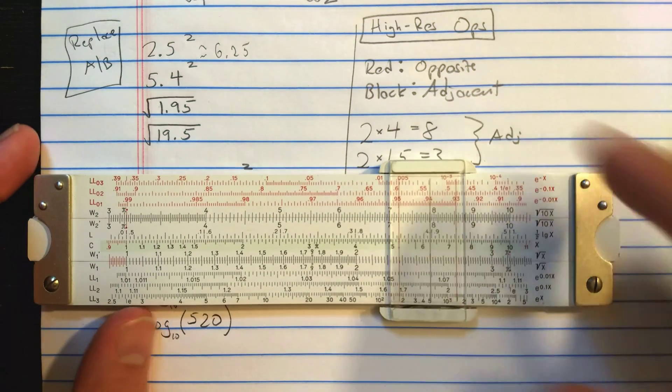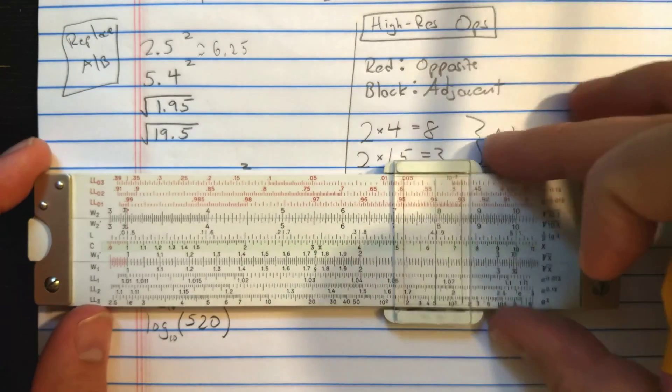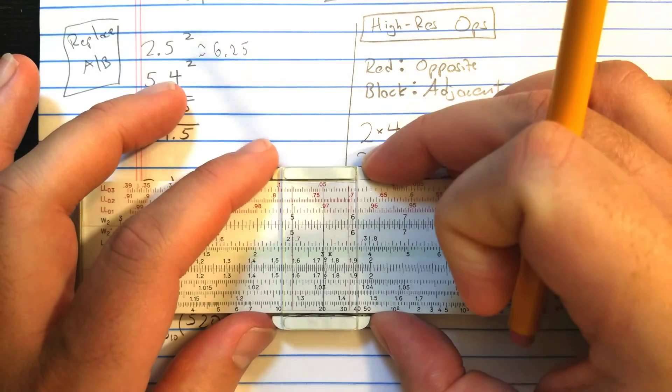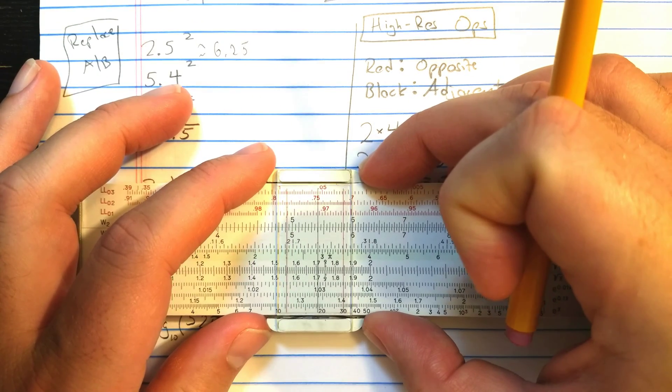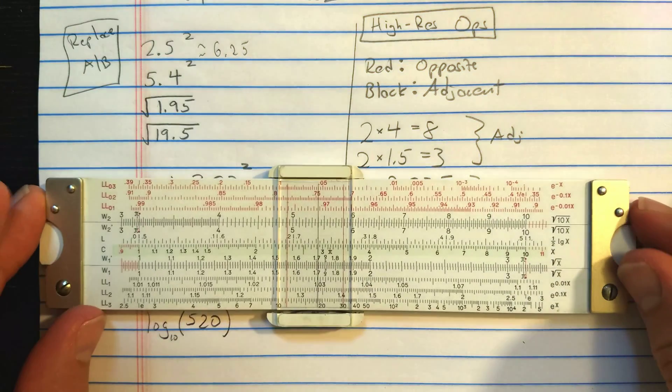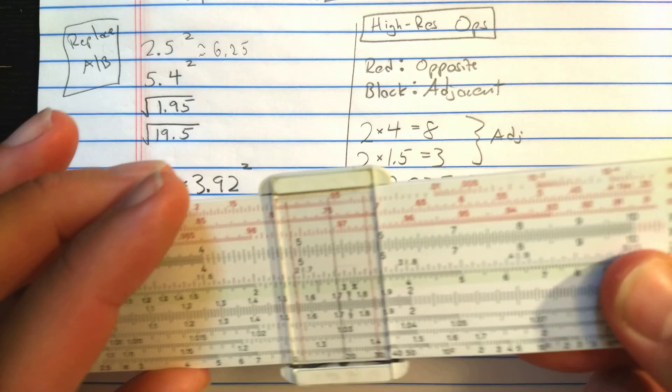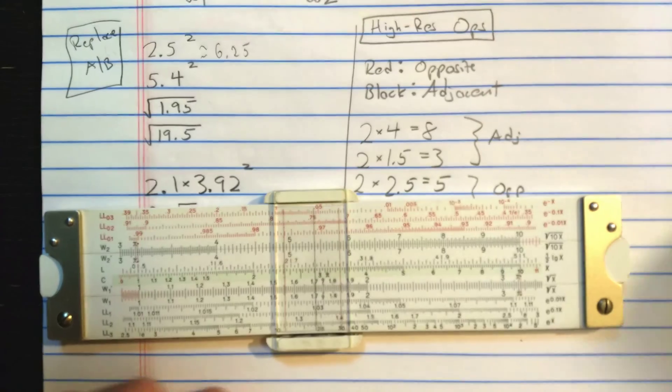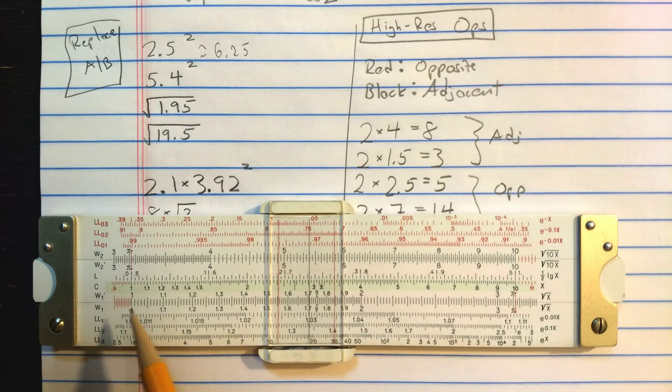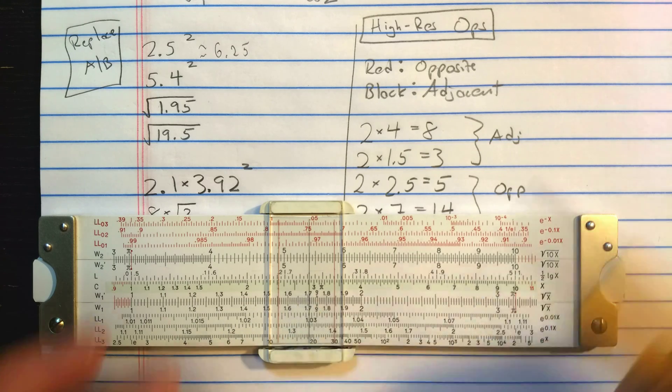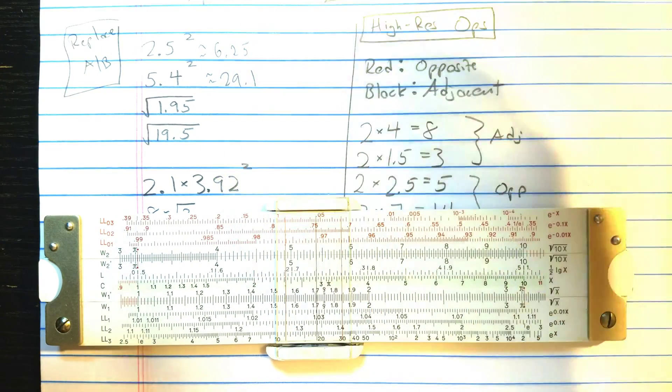If you want to compute 5.4 squared, 5.4 here is up on W2. I've knocked the alignment off a little bit here. Okay. I'll read the square of 5.4 on the C scale. It looks like 2, 291. Let's read that as 29.1.